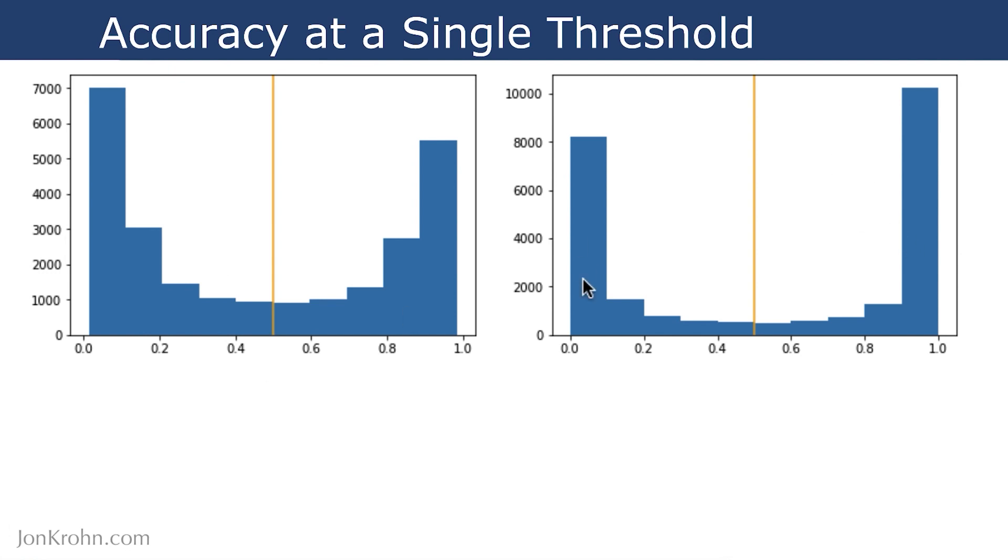And so we could potentially be missing out on something here. It looks like this model, assuming it's classifying correctly, or at least as correctly as this model, we should think that this model is better because it's more confident about its hot dog predictions or its not hot dog predictions relative to this other model.